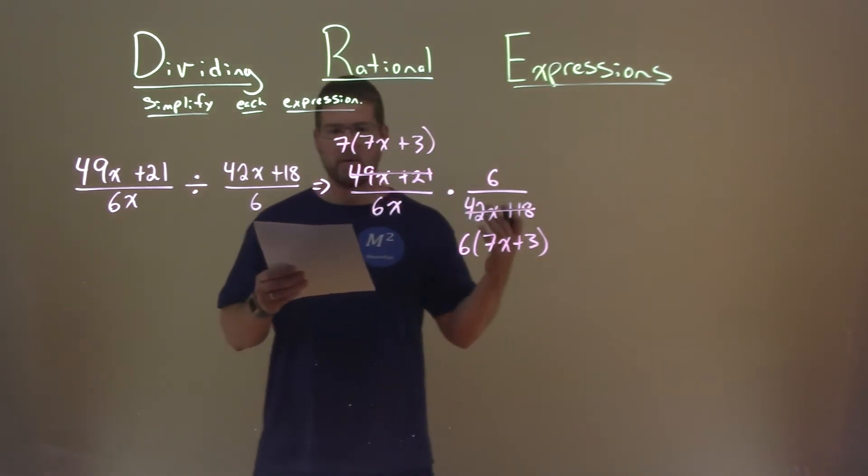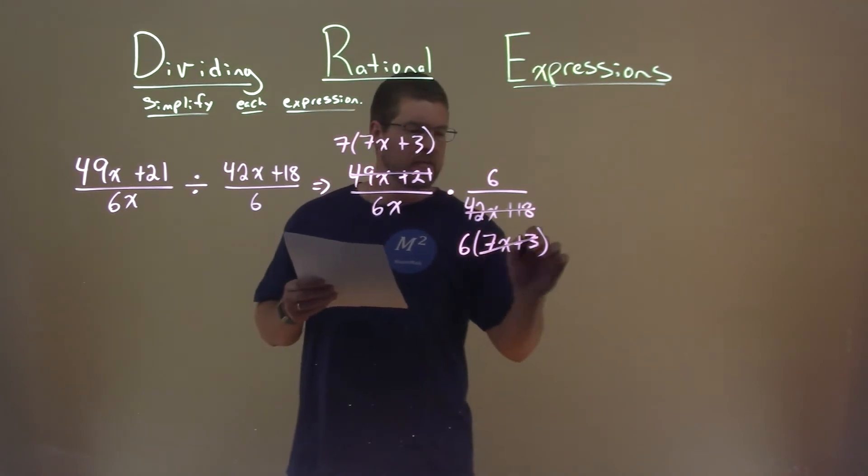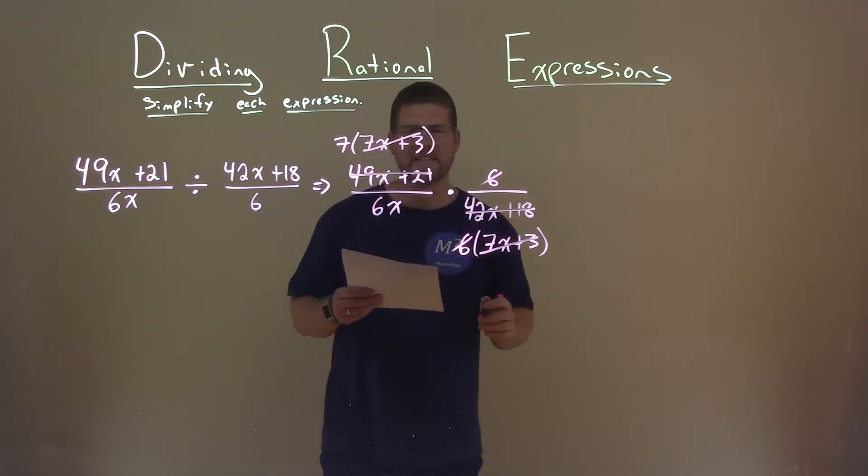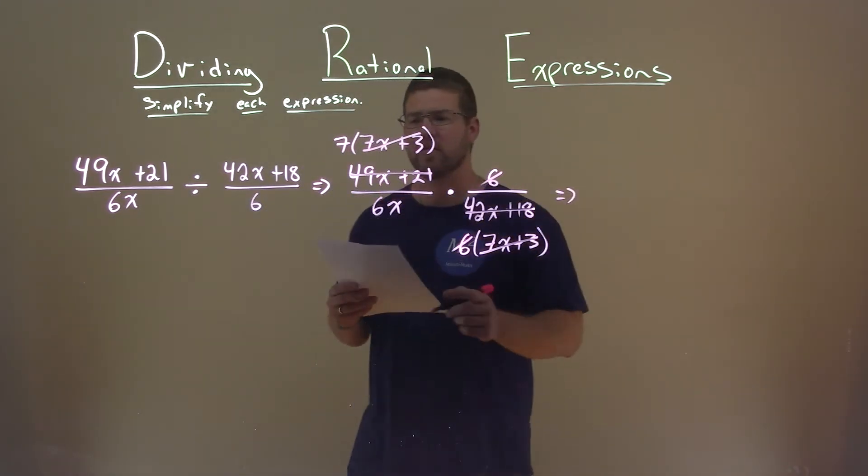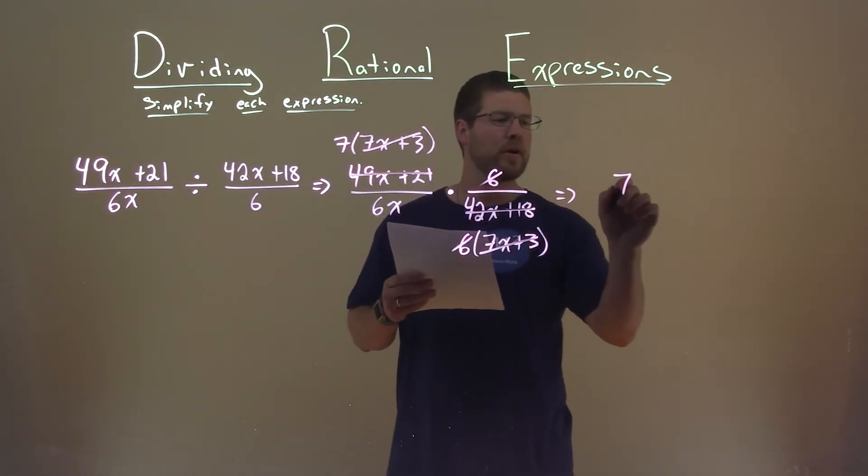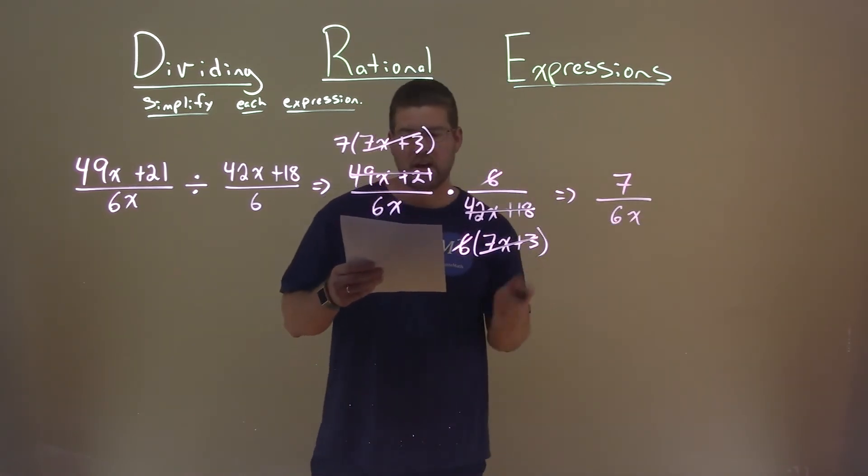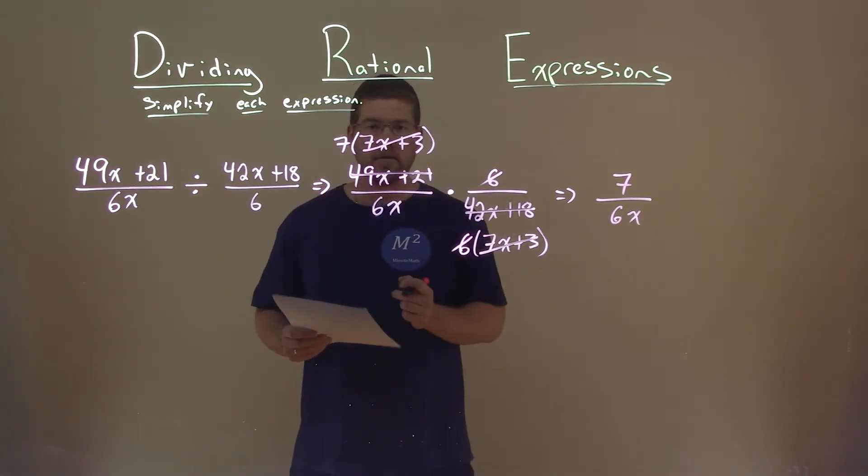Now let's cross off what we can. 7x plus 3 and 7x plus 3 cancel out. The 6s cancel, and that's all that I can see cancels. So what's left over? There's a 7 left in the numerator, and the denominator is just the 6x. And so 7 divided by 6x is our final answer.